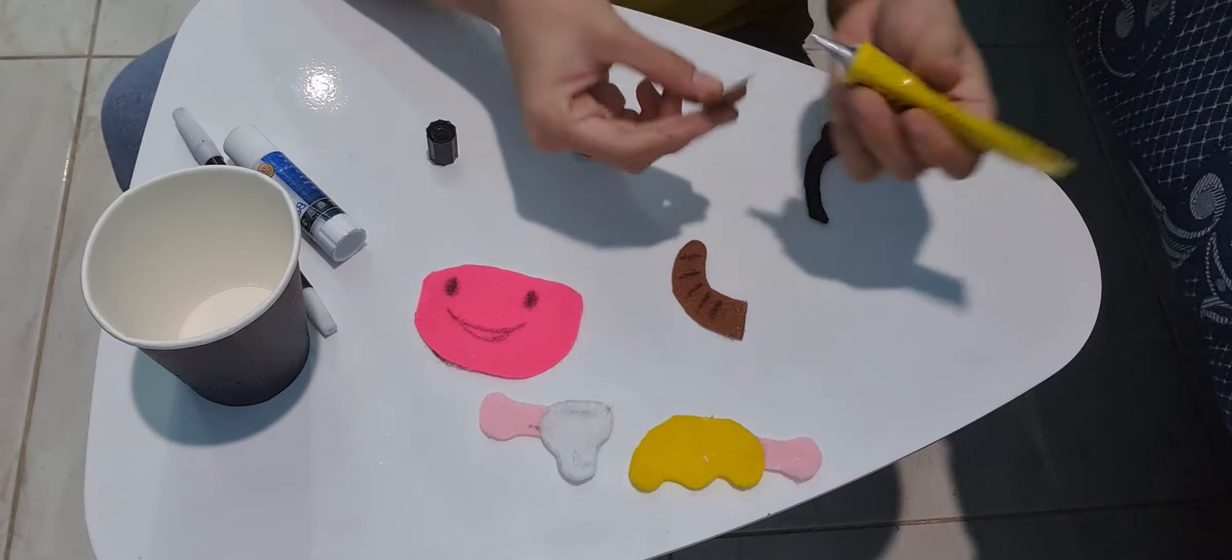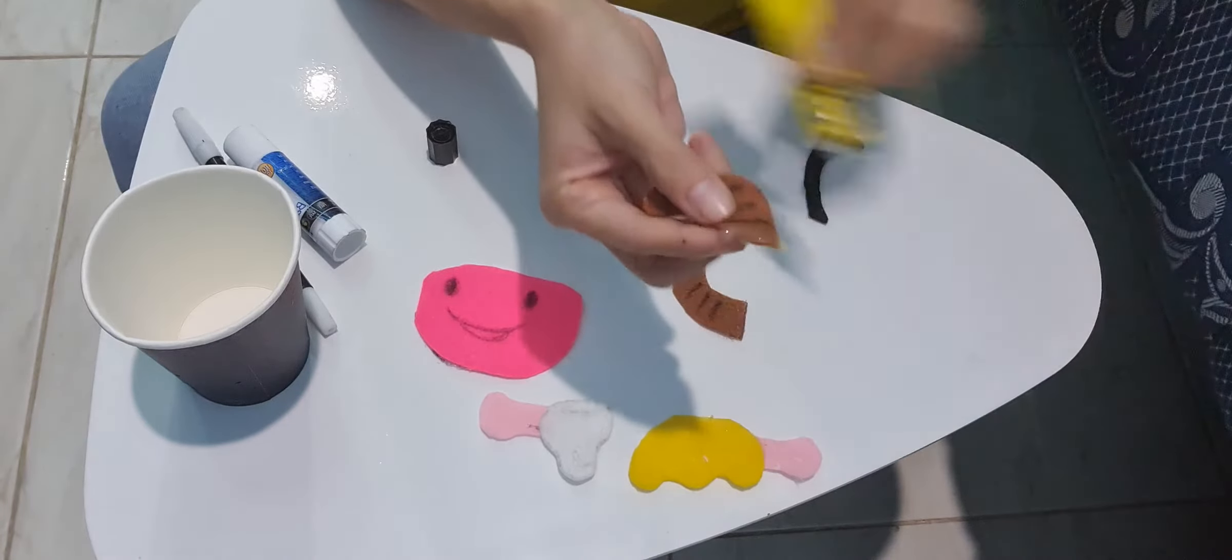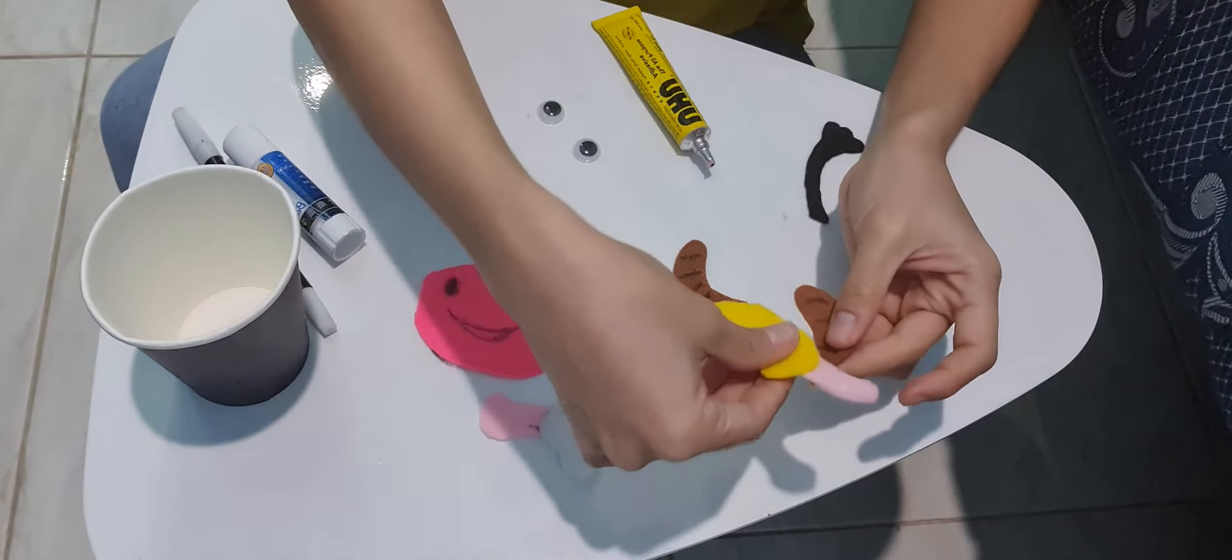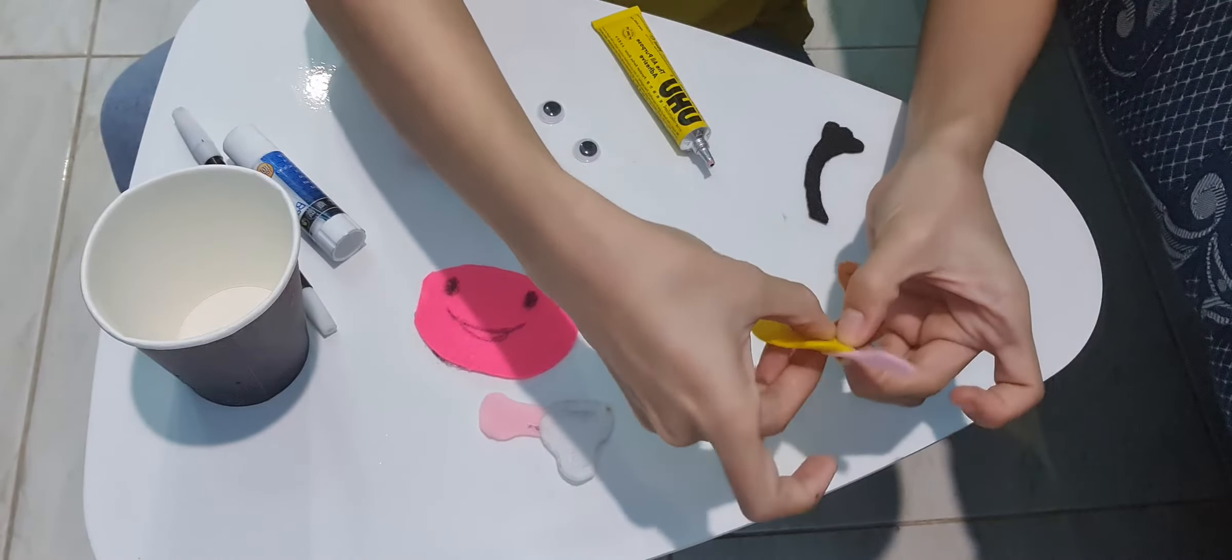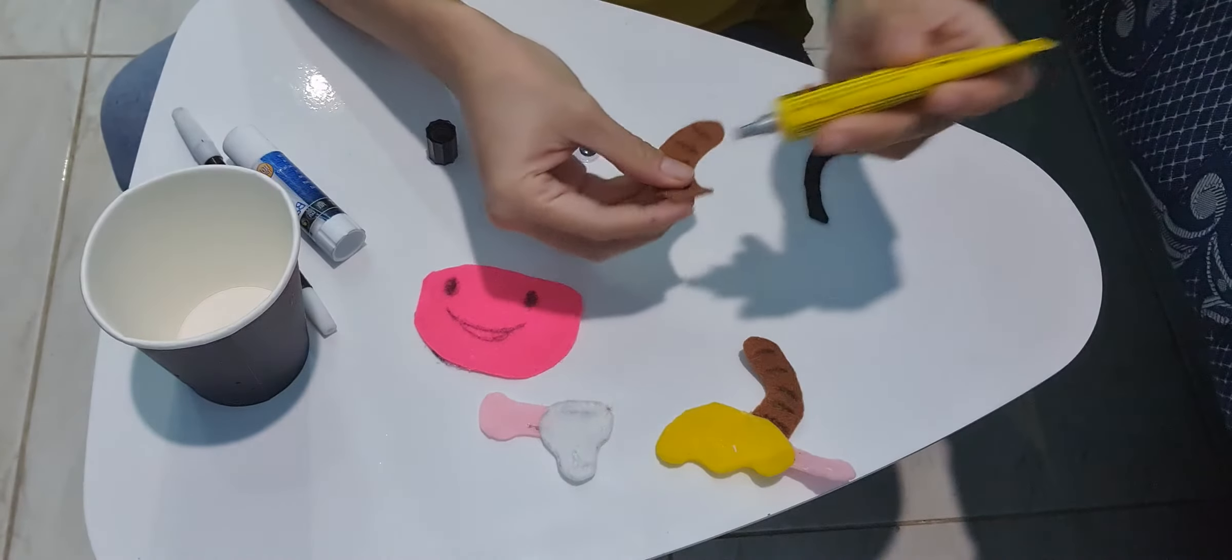Now let's get the brown one, apply the glue. We will paste behind the yellow one here, apply the glue.